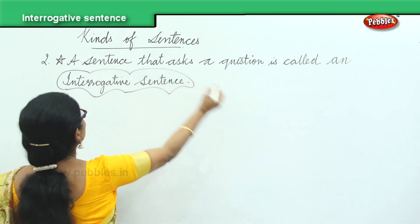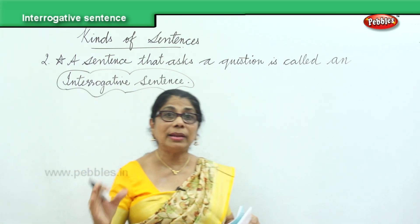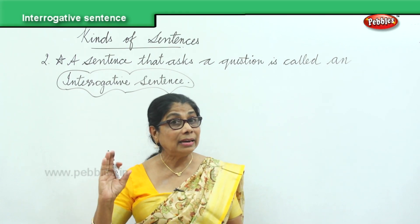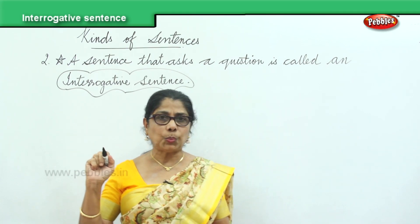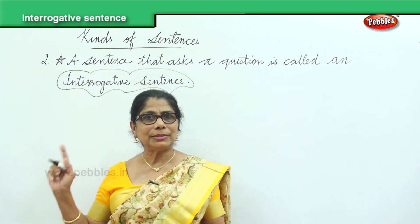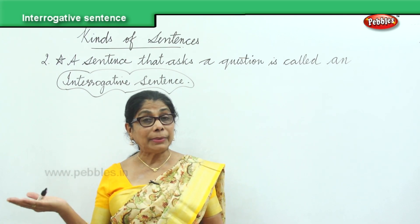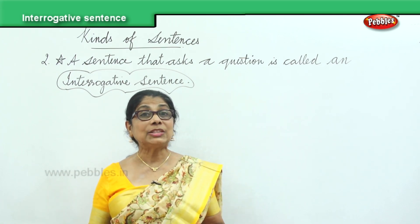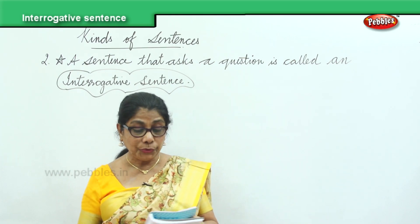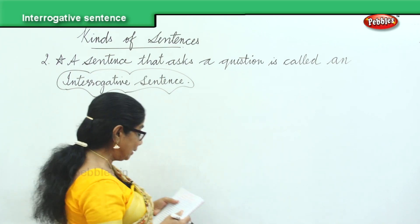A sentence that asks a question is called an interrogative sentence. In this sentence, it begins with a capital letter and ends with a question mark, because interrogative means question. So it begins with a capital letter and always ends with a question mark. Now I will give you a few interrogative sentences for us to practice.